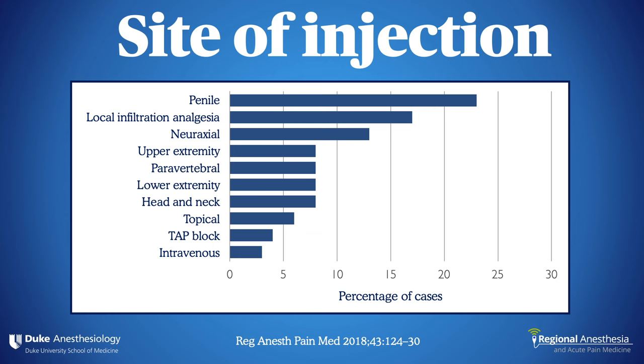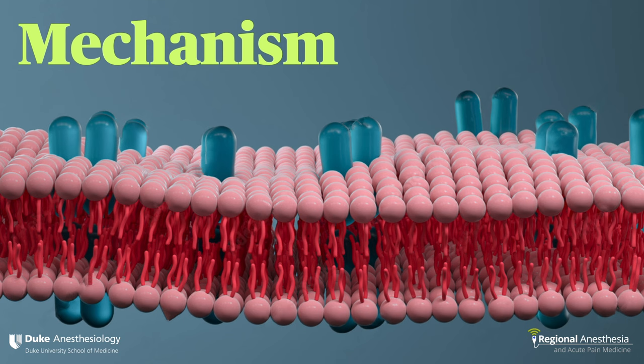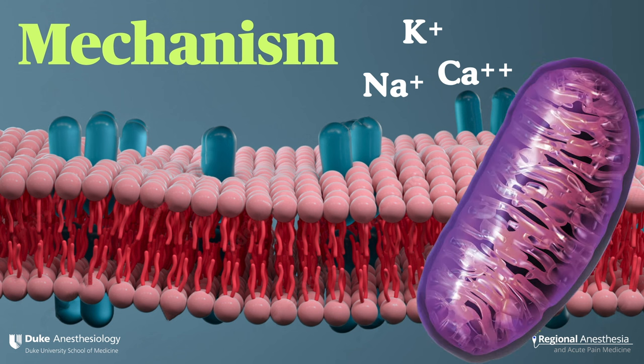Keep in mind that there is no site truly safe from LAST. The toxic mechanism is complicated and not fully understood. Part of it relates to blockade of sodium channels in the heart and central nervous system, with inhibition of potassium and calcium channels as well. However, the primary toxic mechanism probably relates to poisoning of the mitochondrial oxidative phosphorylation pathway — the cells simply can't generate ATP for energy. This mitochondrial poisoning may also explain why standard vasopressors and inotropic drugs are frustratingly ineffective in severe LAST.